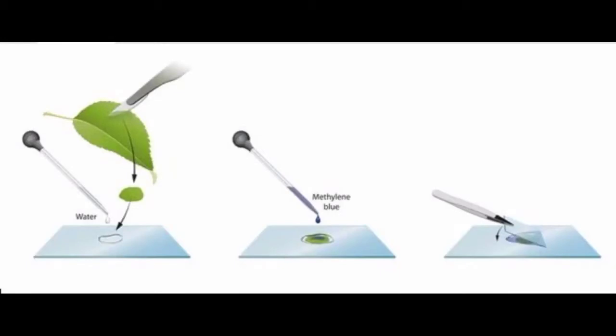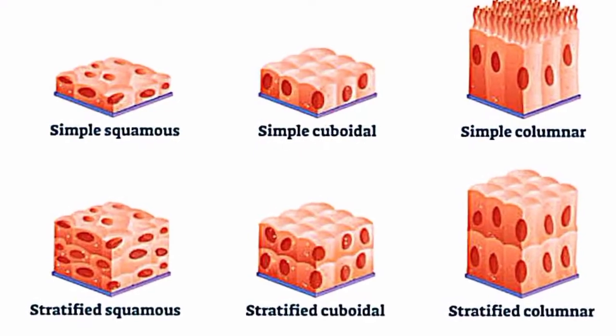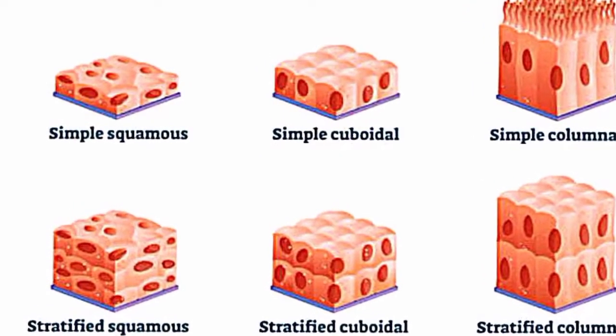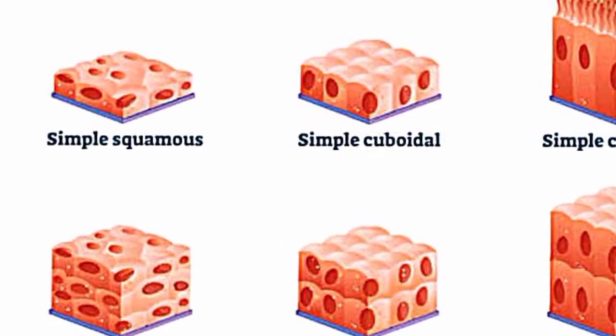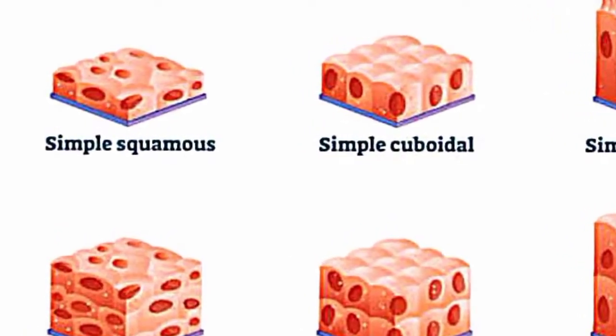Hello friends, I am Asis. This is the second practical of human anatomy and physiology. We are now discussing experiment number two: to study microscopic examination of epithelial and connective tissue using compound microscope and permanent slides.